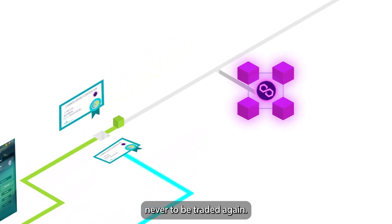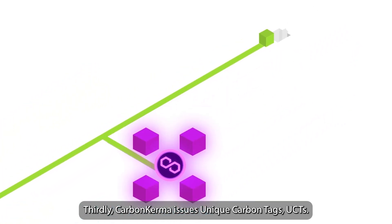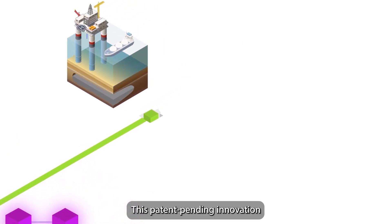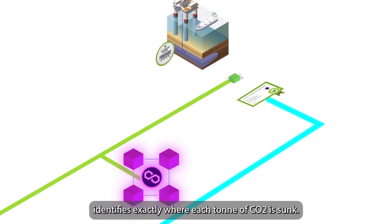Thirdly, Carbon Kerma issues unique carbon tags, UCTs. This patent-pending innovation identifies exactly where each ton of CO2 is sunk.